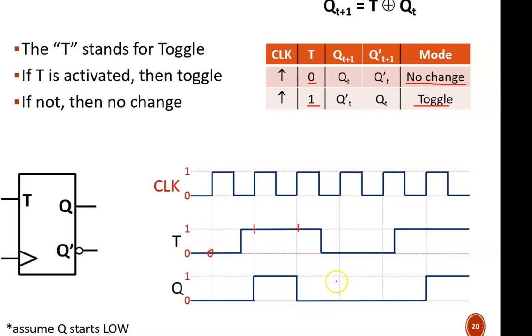The next two clock cycles both have the no change instruction, which is why we see Q stuck at 0. At the final positive edge, T equals 1, and Q toggles from 0 up to 1.